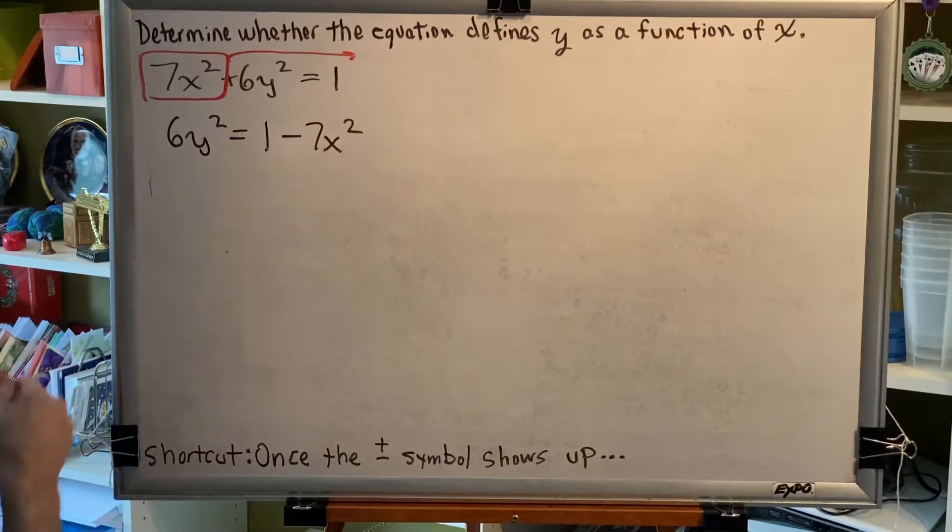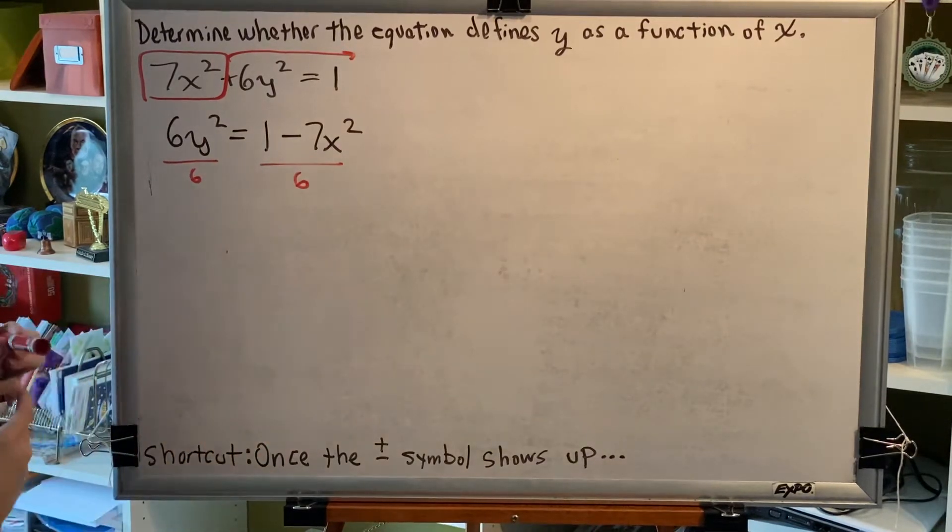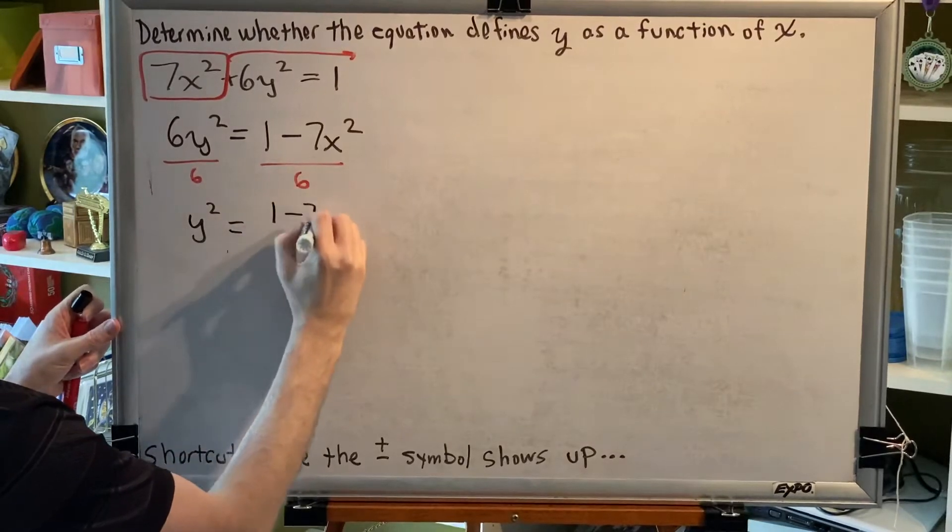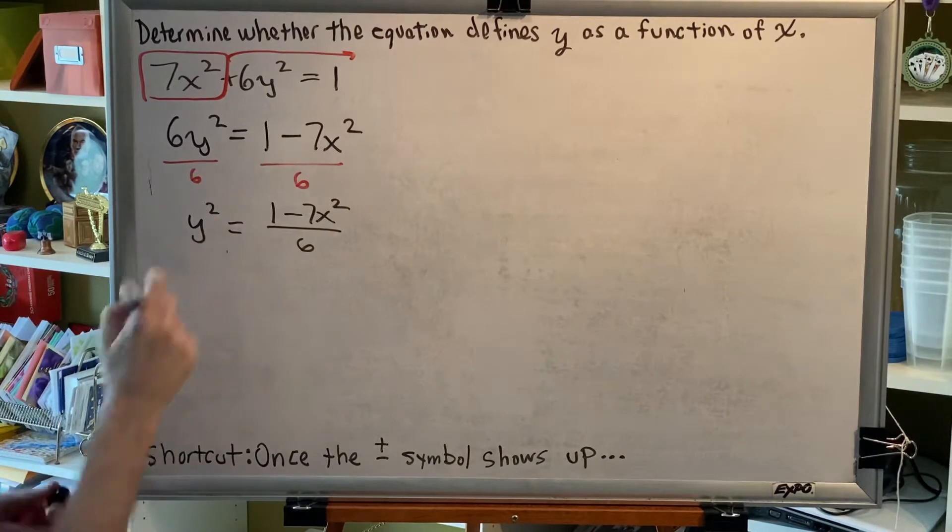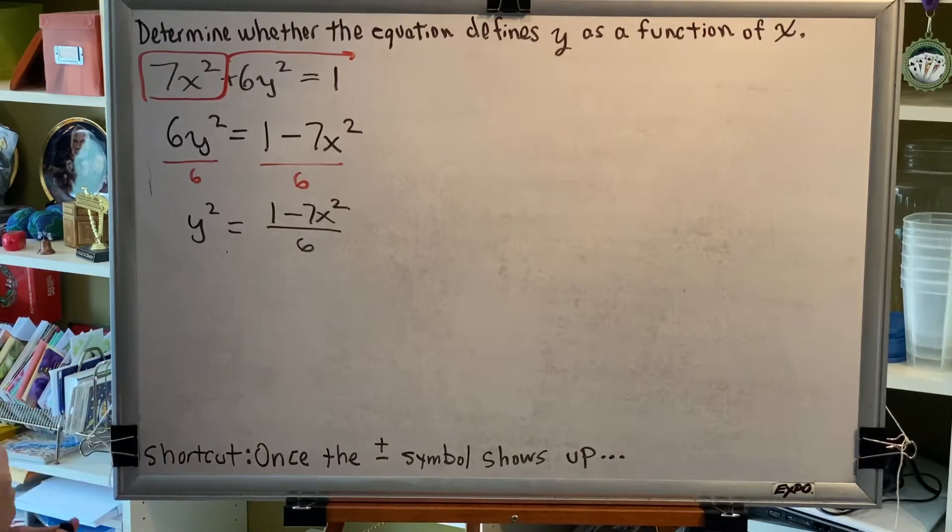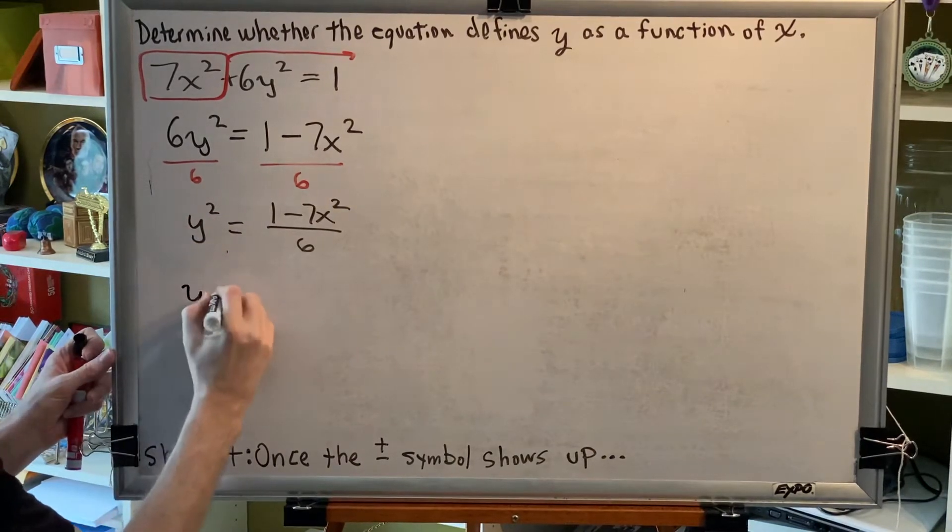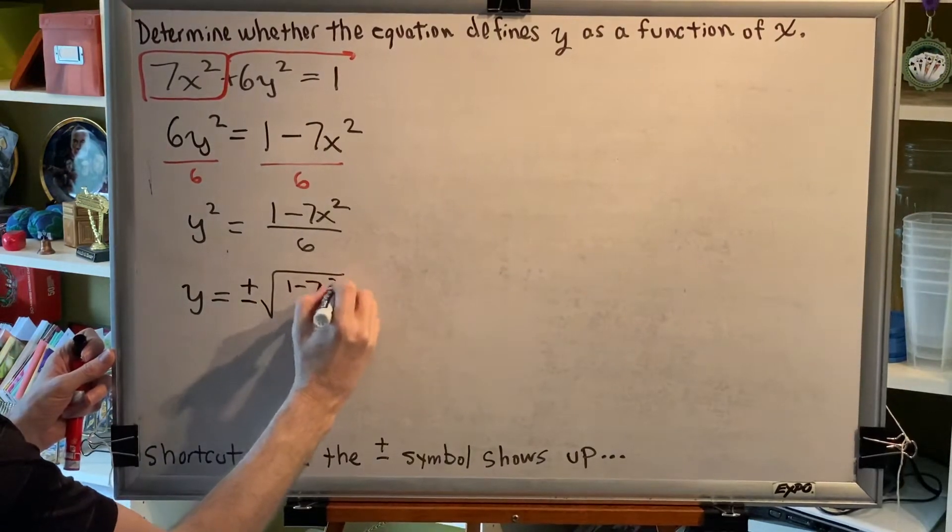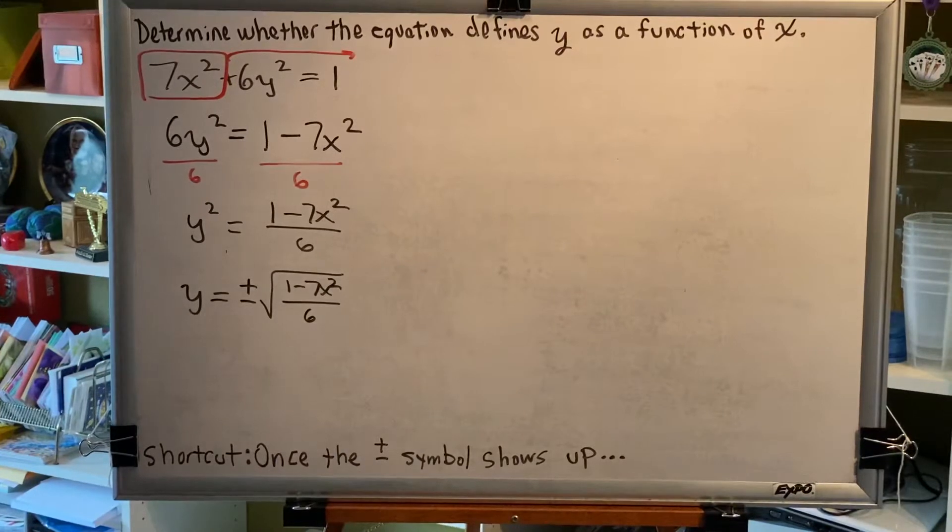Next, we're going to see if we can get rid of this 6. The 6 is multiplying by the y², so to get rid of it, we will divide. So then we get y² = (1 - 7x²)/6. Next, to get rid of the exponent of 2, we use the square root property from intermediate algebra, which says you can drop the 2 and any parentheses as long as you put plus or minus square root on the other side. So we get y = ±√[(1 - 7x²)/6].